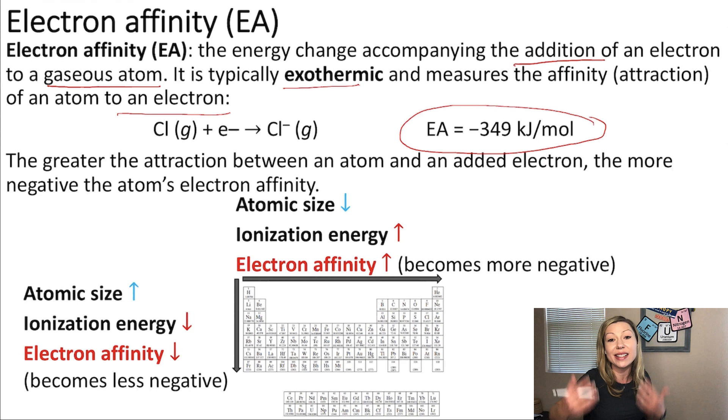So, how much an atom likes an electron? The greater the attraction between the atom and the electron, the more negative the atom's electron affinity is.